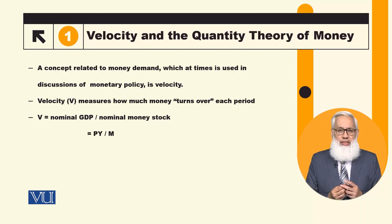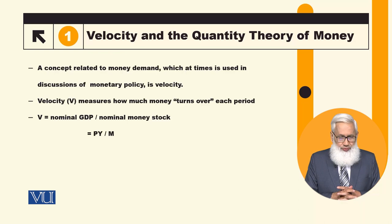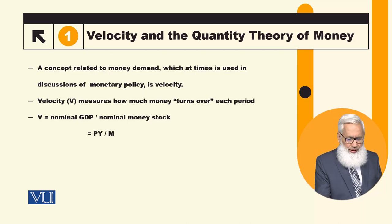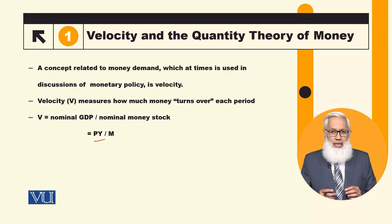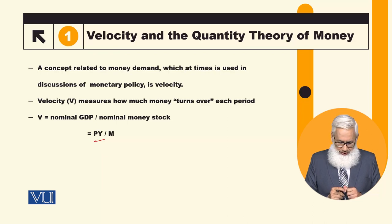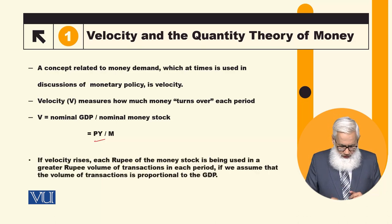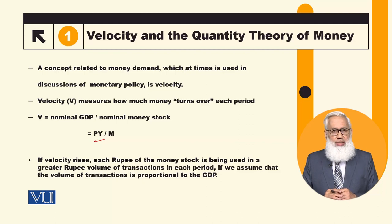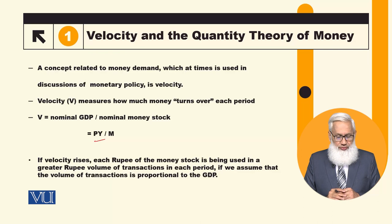We can calculate velocity as: V (velocity) equals nominal GDP divided by nominal money stock. Nominal GDP is P times Y, where Y is real GDP and P is the price level. So price level multiplied by real GDP gives nominal GDP, divided by M (nominal money stock). This determines the value of velocity. If velocity rises, it means each rupee of the money stock is being used in a greater rupee volume of transactions each period.